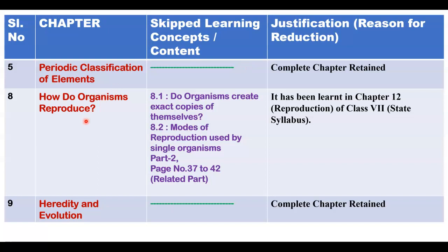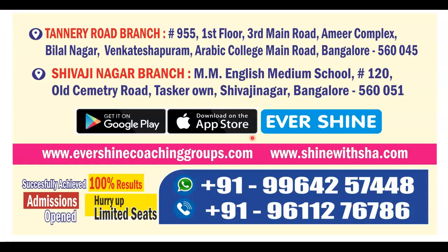Next, How Do Organisms Reproduce? Section 8.1 — 'Do organisms create exact copies of themselves?' — and 8.2 — 'Modes of reproduction used by single organisms' — these two topics are deleted, covering Part 2, page number 37 to 42 and related parts. Next, Heredity and Evolution — this full chapter is retained; you want to study it completely.